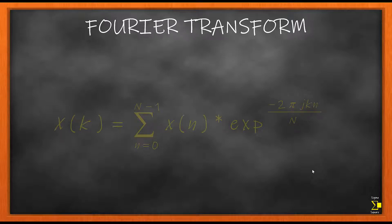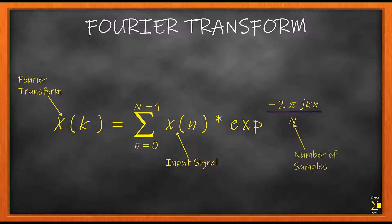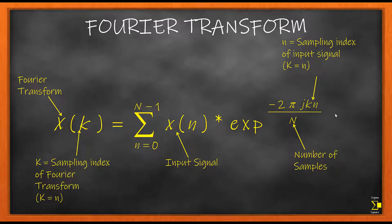Let's start by writing the equation for Fourier transform. On the left hand side of the equation, we have x(k), which is the Fourier transform we intend to find. On the right hand side, we have the input signal x(n) for which we are finding the Fourier transform. Then n is the number of samples, representing the length of your input signal. k and n are the sampling indices of your input signal and Fourier transform, going over the entire input signal from 0 to n-1. Importantly, k equals n, meaning the length of your Fourier transform is always the same as the length of your input signal.